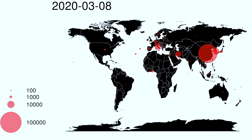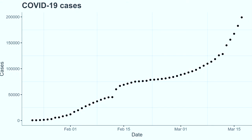Just 10 days ago, the total number of COVID-19 cases around the world was about 110,000, and 80% of those had come from mainland China. Now, 10 days later, we are at double that number — we went from 110,000 to 220,000 in just 10 days.